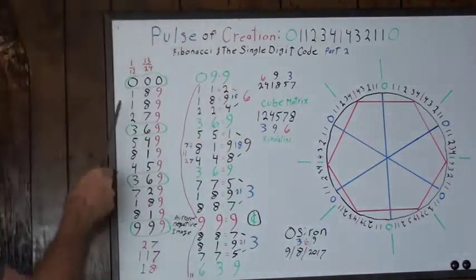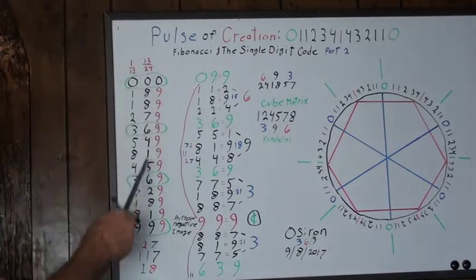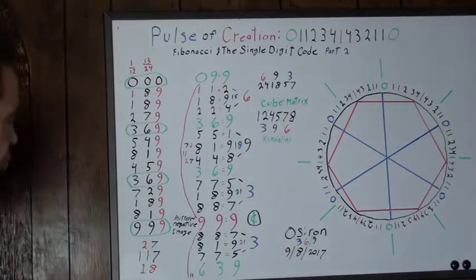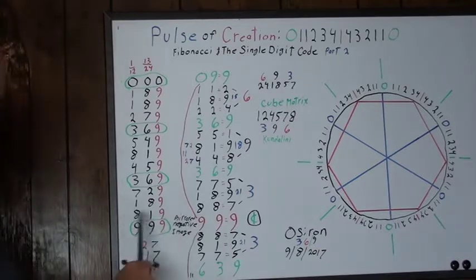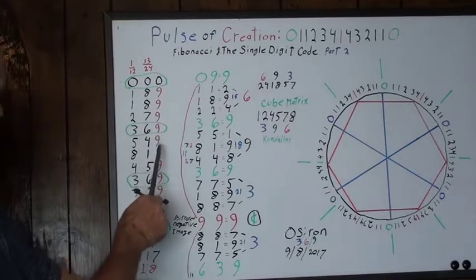So I got it in two rows of 12. The first row one through 12 and then the second row 13 through 24. And when you do that all the numbers cancel out to nine.